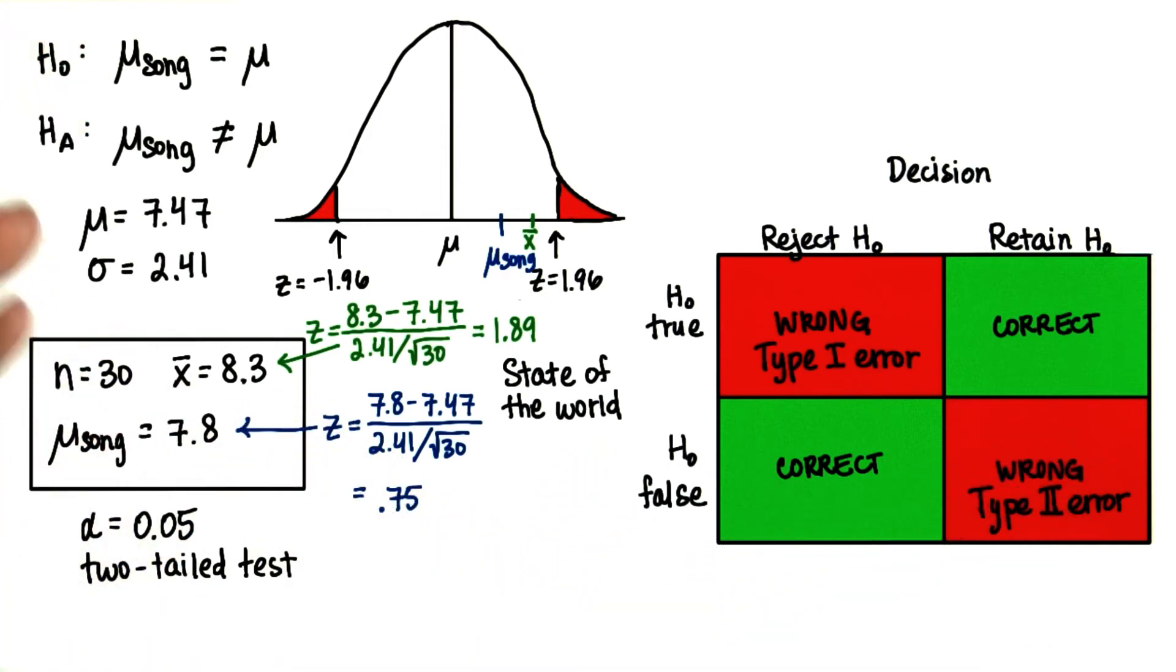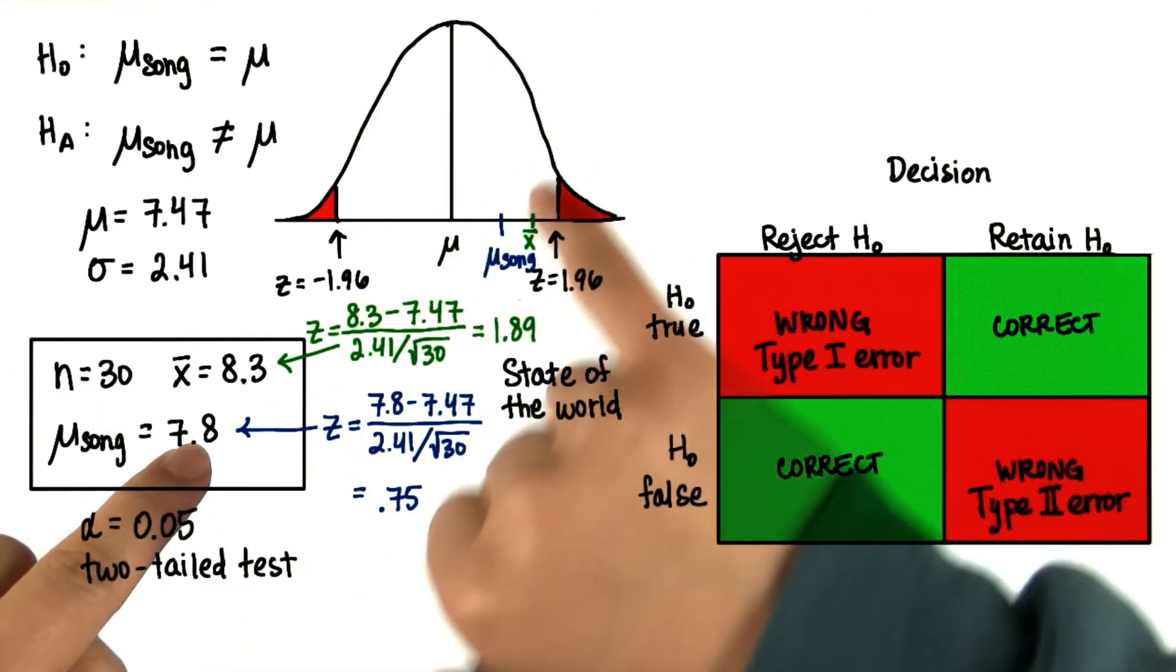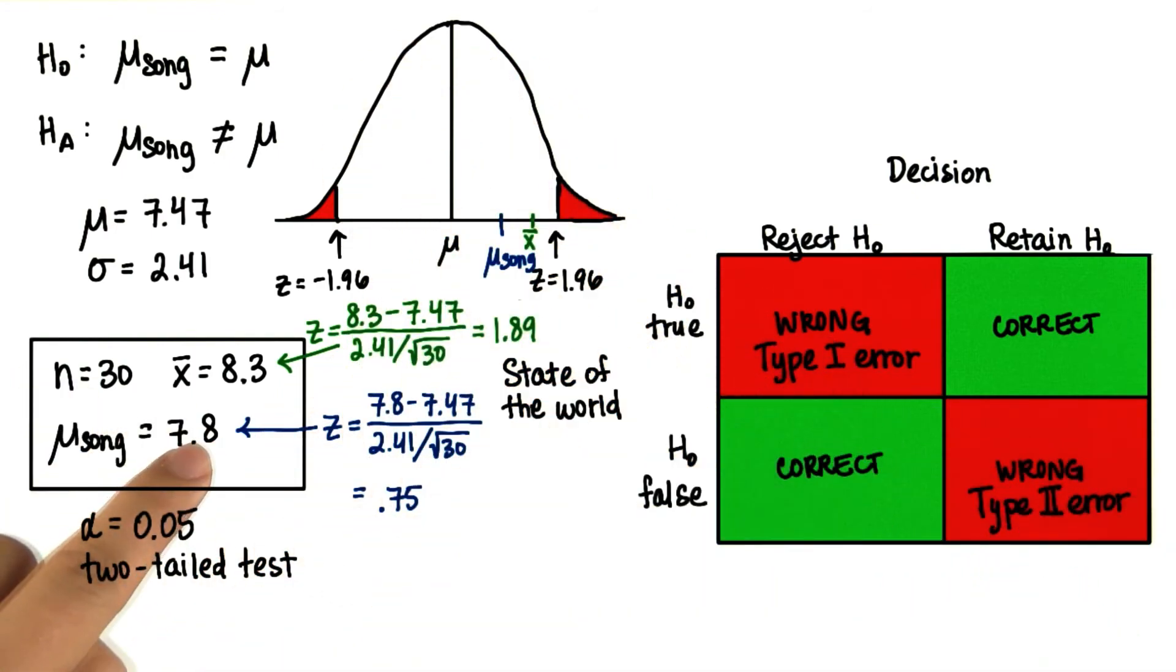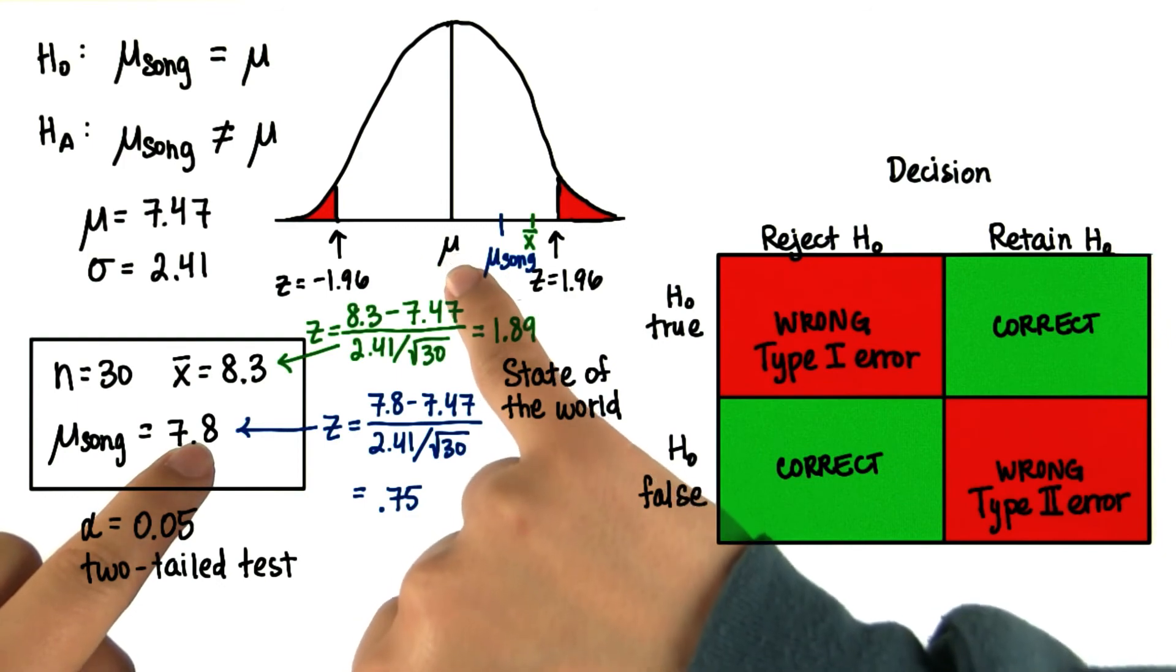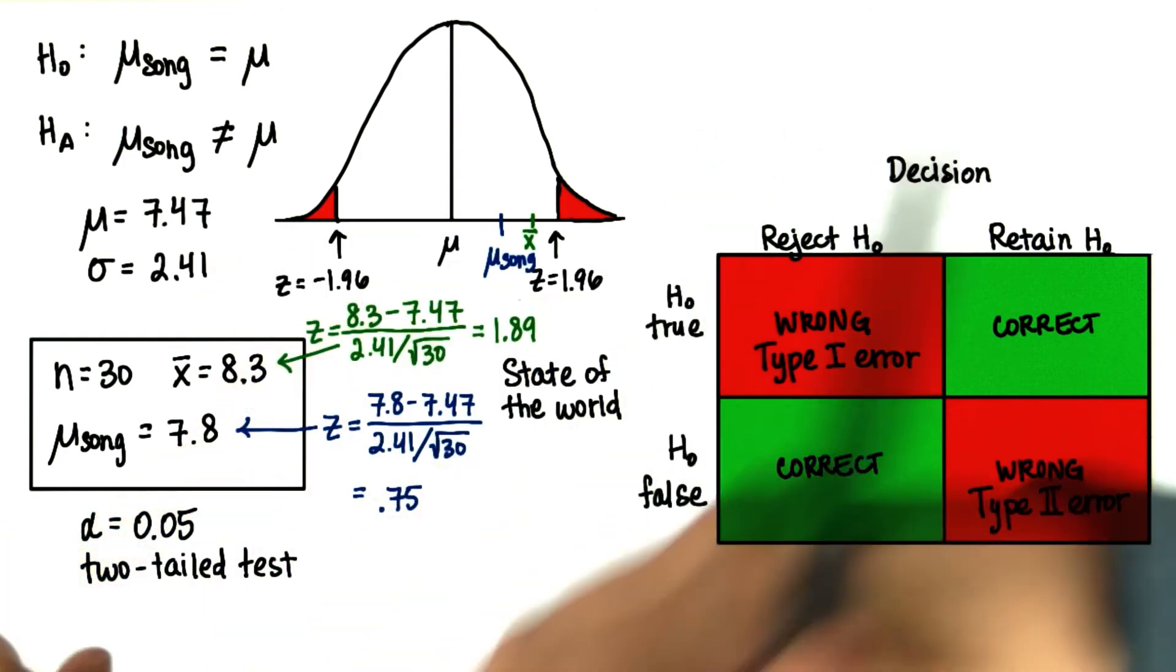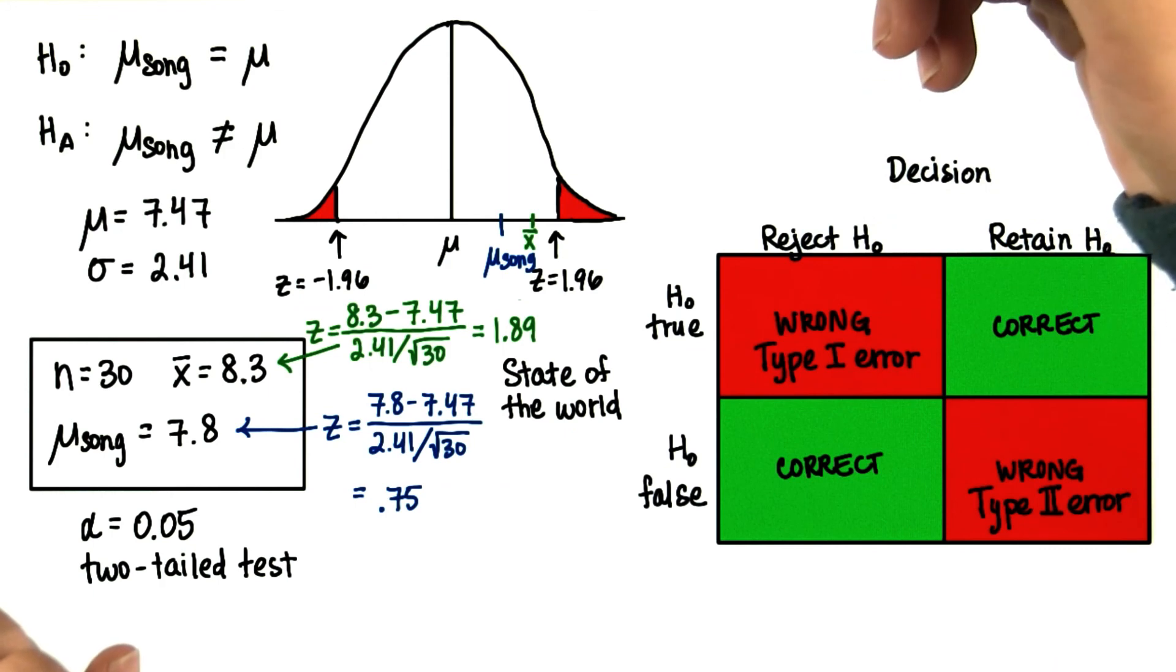And in this case, we made the right decision because this population parameter also falls outside the critical region, close enough to the current population mean. Since we retained the null when the null was true, then this quadrant represents what happened.